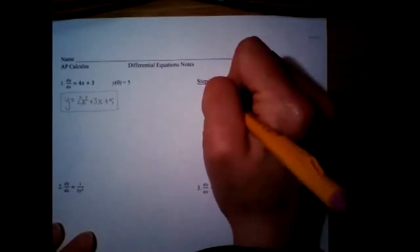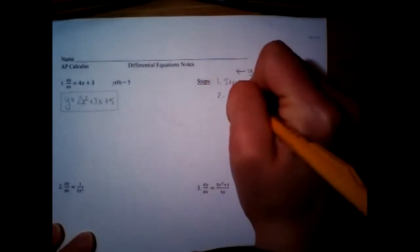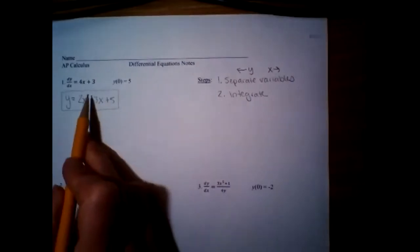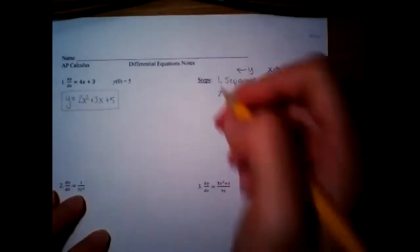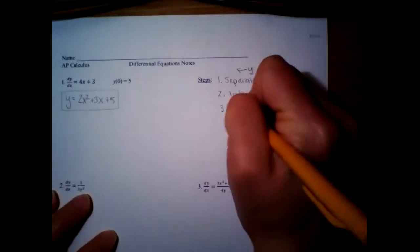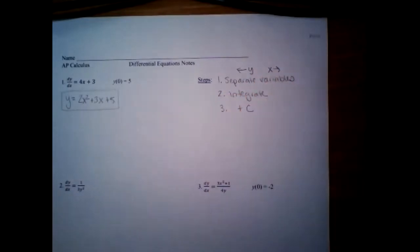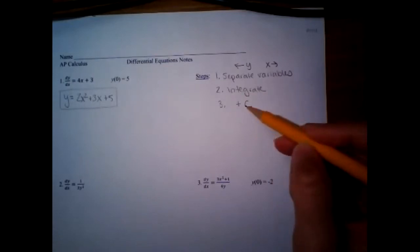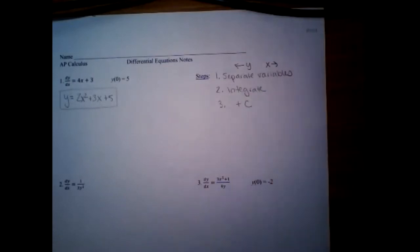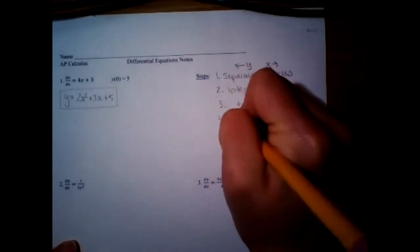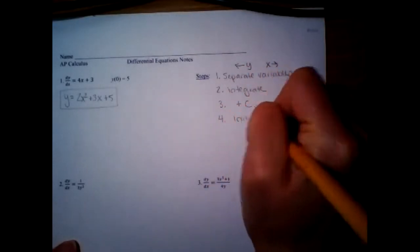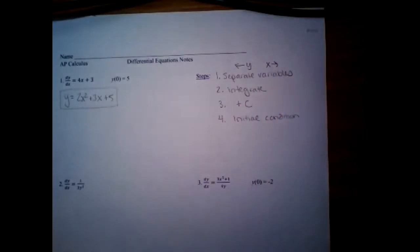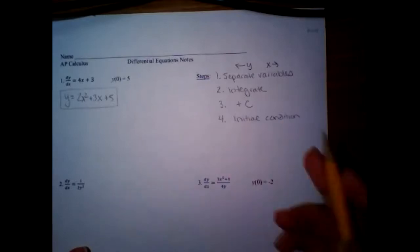Separate the variables, then you're going to integrate — that's the anti-derivative — on both sides. Make sure you put a plus C. I call it its own step because it's so important. Then use the initial condition if there is one; sometimes they don't give one, and if there's not, skip that step.